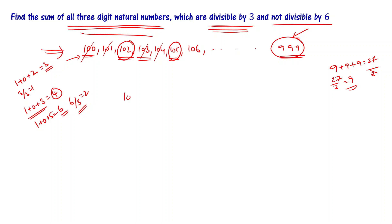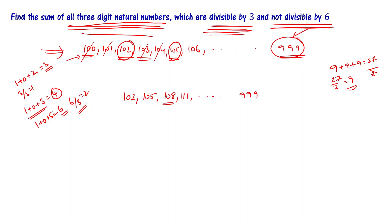Now let's write the numbers that are divisible by 3: 102, 105, 108 (sum of digits is 9), then 111, and so on up to 999. Among all these three-digit natural numbers, the ones divisible by 3 form our candidate list, and those not divisible by 3 are excluded.